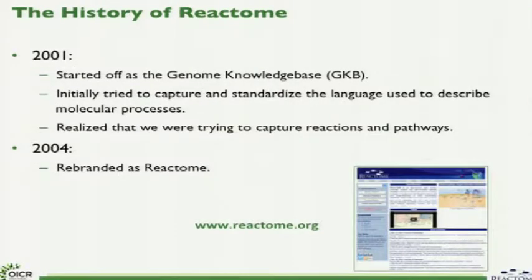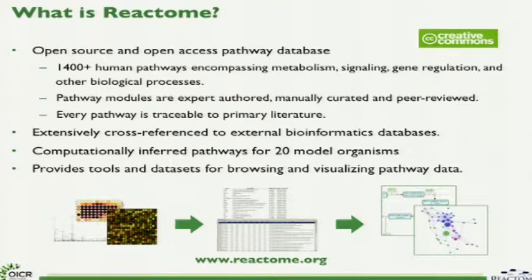Reactome started over a decade ago in 2001 as the Genome Knowledge Base. We were initially trying to capture and standardize a language to describe molecular processes. We realized we were actually capturing reactions and pathways, and in 2004 we rebranded as Reactome. Reactome is an open source, open access pathway database with over 1,400 human pathways encompassing many areas of biology. These pathway modules are expert authored, manually curated, and peer reviewed.